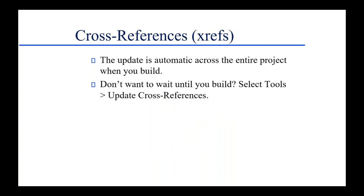If you change the title of a topic that's the target of a cross-reference, when you generate the output, the cross-reference wording gets updated automatically across the entire project — a huge time saver. You might still be working on the project and see the old wording in the topic. So you can either wait until you build, or select Tools then Update Cross-References, which will update all cross-references in the project before you build.